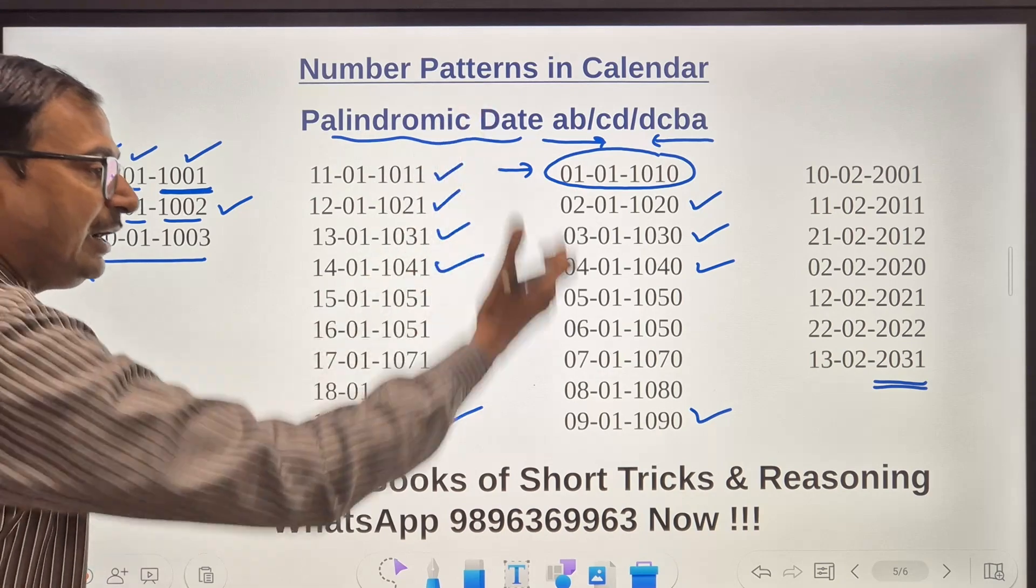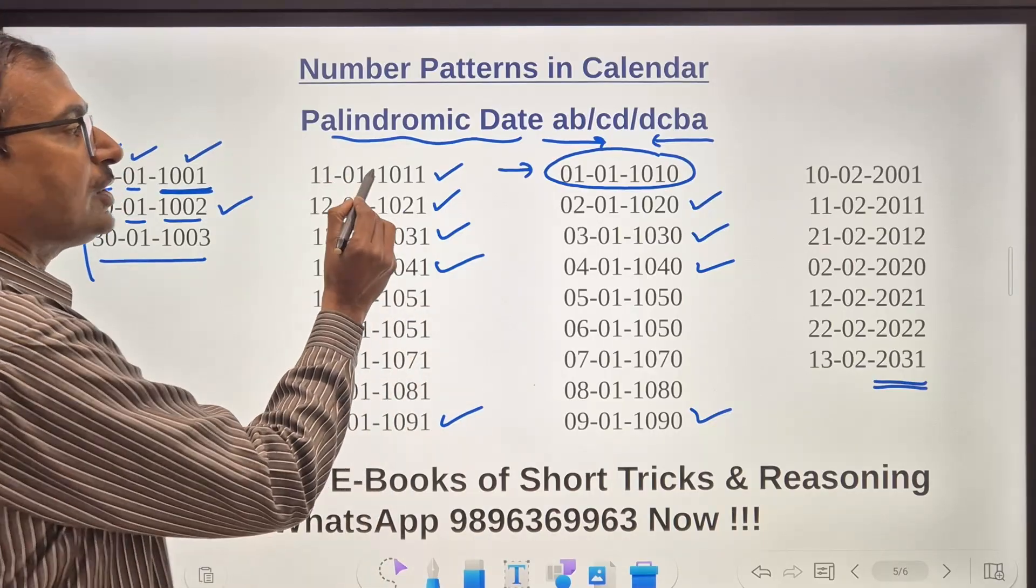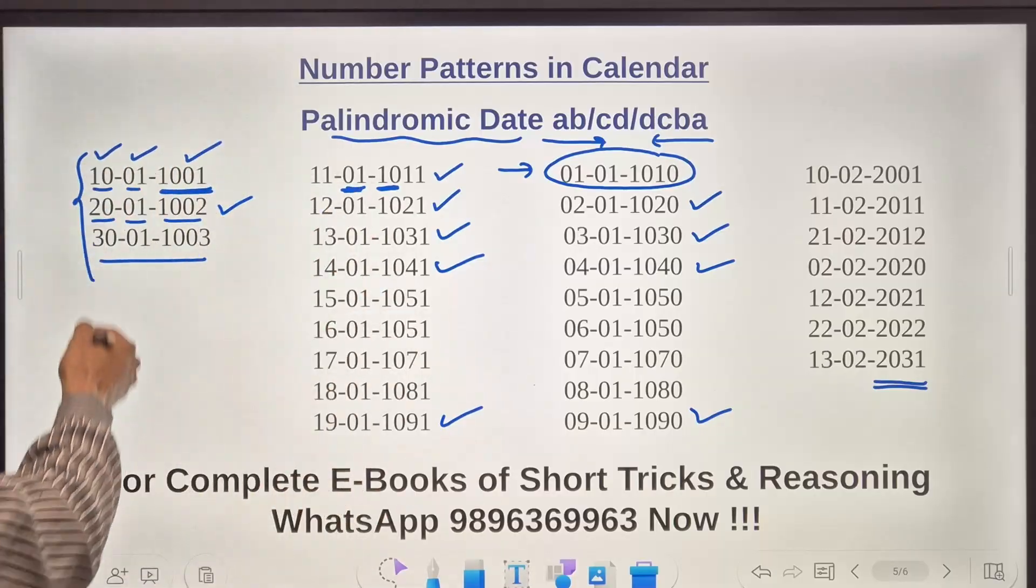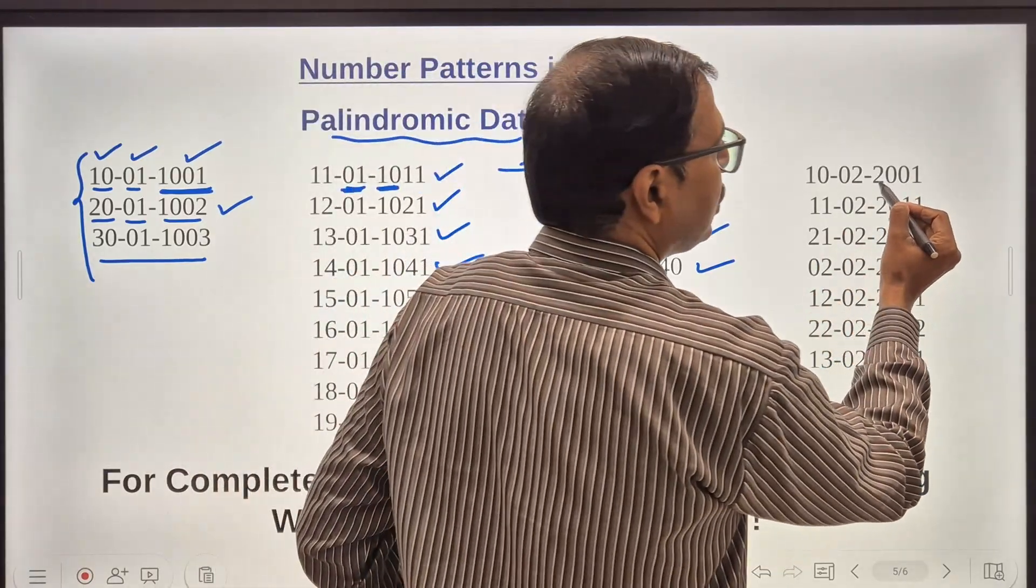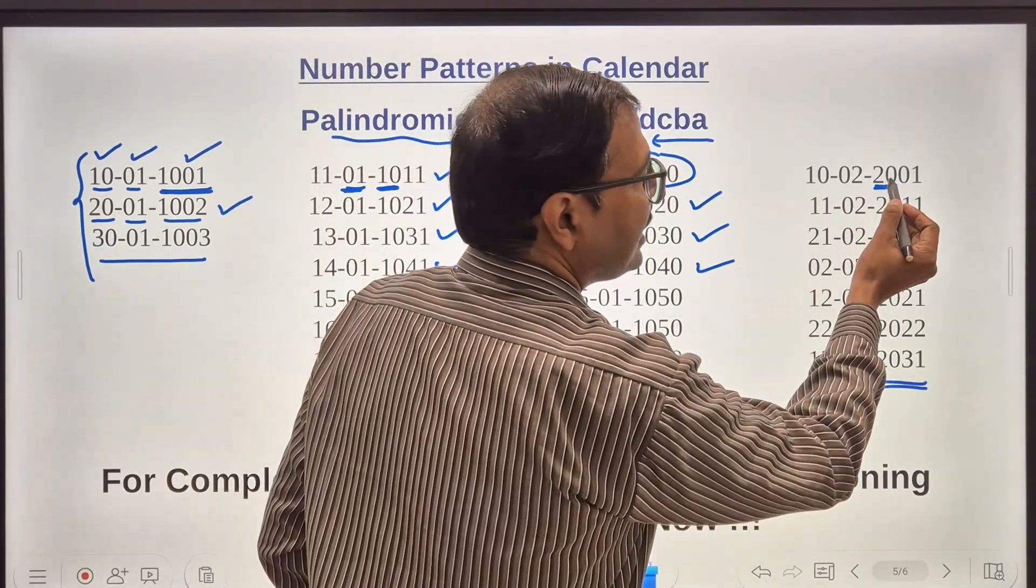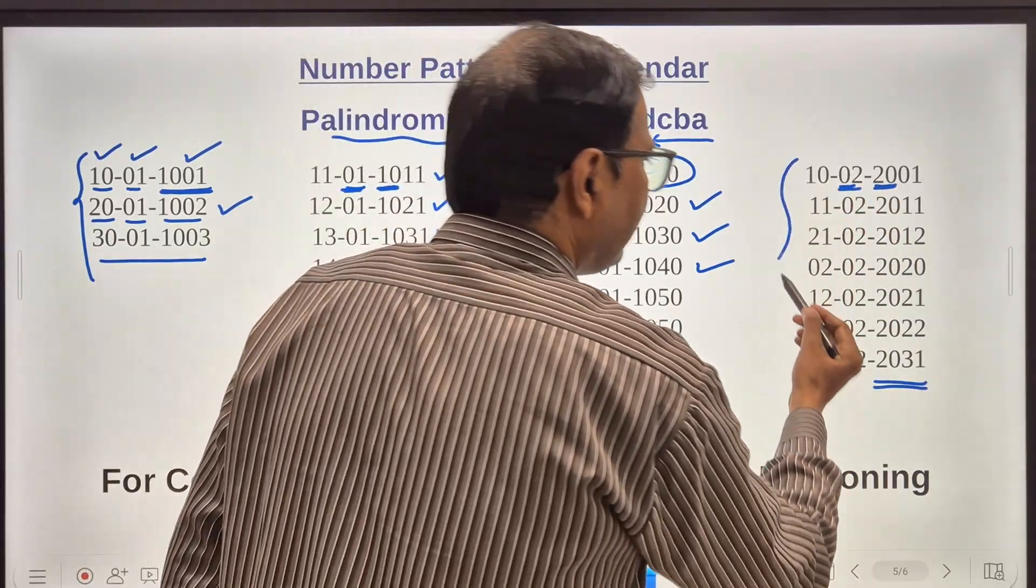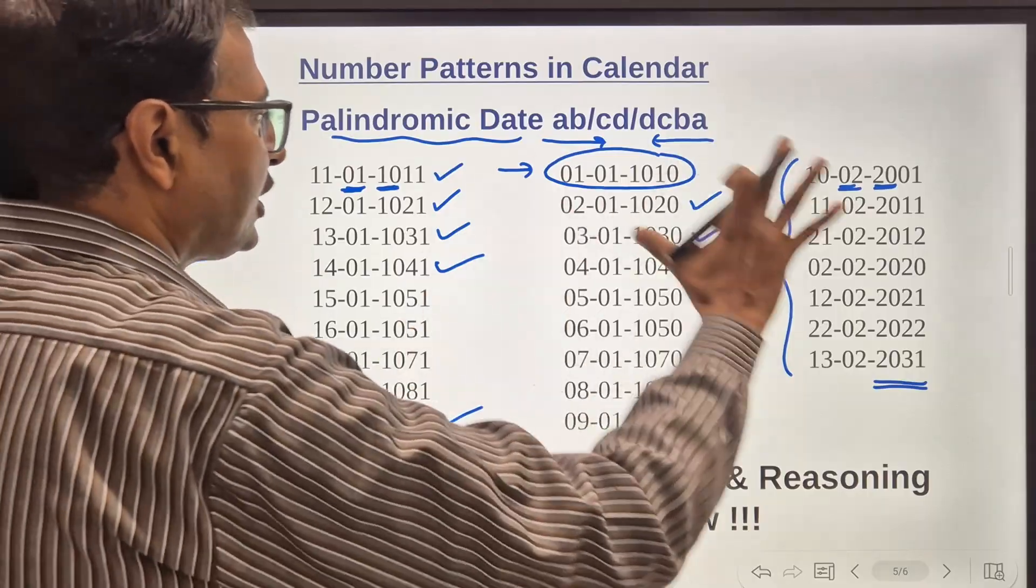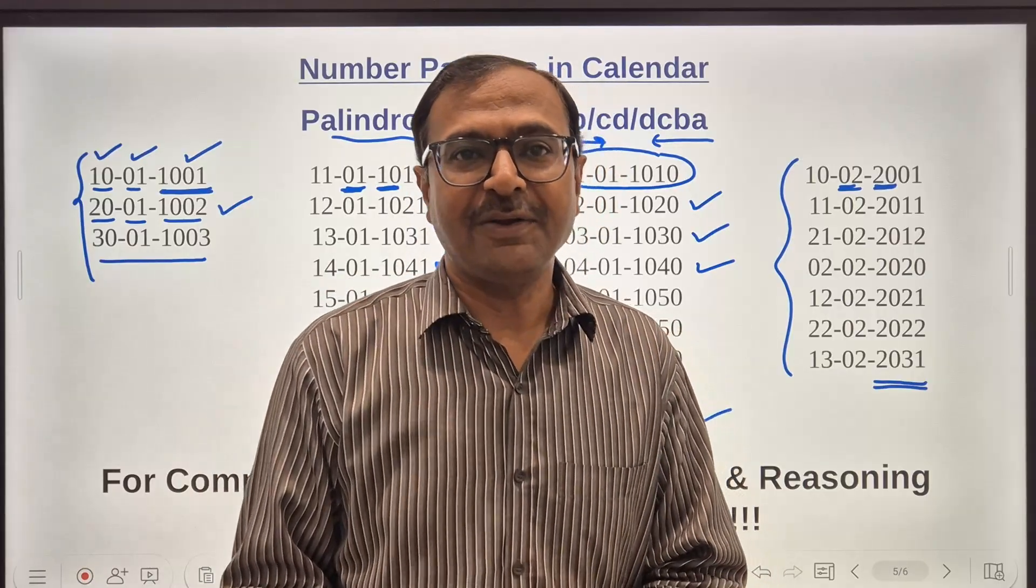These all fell in the month of January itself you can see because here we have 10 so here we should have a 01 and that is why they are all dates in January. Likewise if you go into the 21st century then 20 will be the first two numbers here in the year so it is bound to have 02 here so all the dates will be in February. And likewise you can work out so many different combinations in which you will get a palindromic date. This is not a comprehensive list, this is a suggestive list where we have given an idea how to get to those palindromic dates.